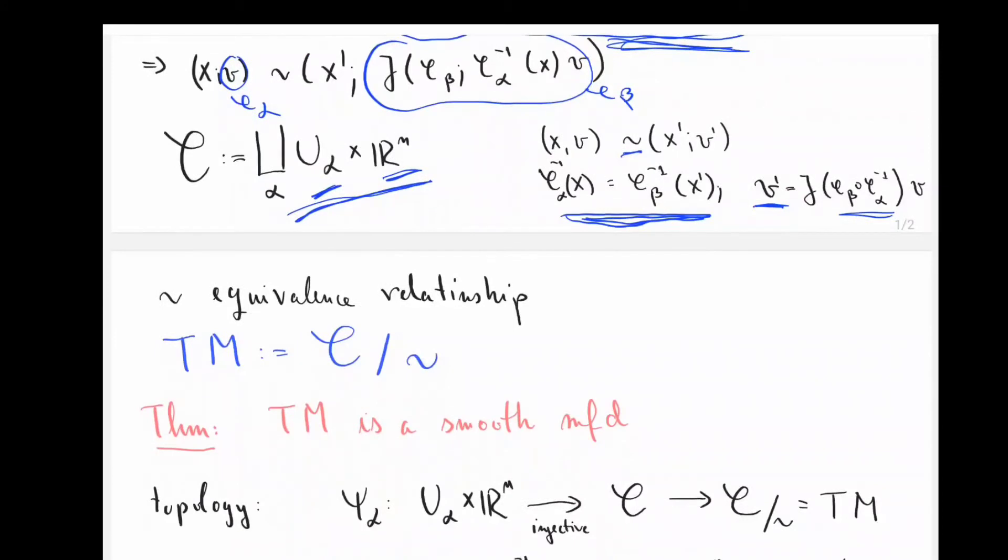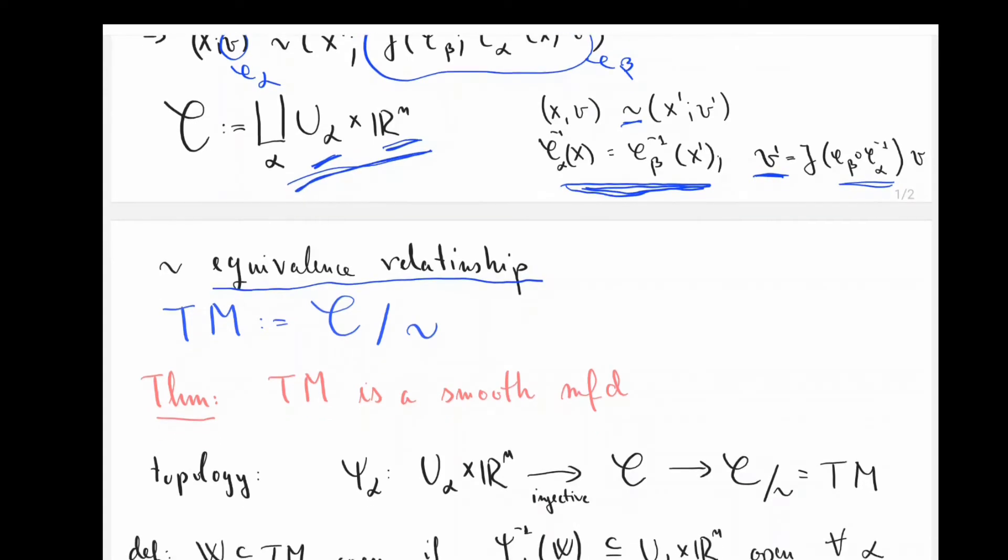Now it's not difficult to show that this relationship tilde is an equivalence relationship, allowing us to introduce the tangent bundle, which is nothing but just the quotient space of this equivalence relationship. So I define that over here. And then really the upshot is, and I will explain you this theorem, the tangent bundle is also a smooth manifold. And it's not too difficult to see this, but you have to sort of take this step by step. So the first thing that the tangent bundle needs in order for it to be a manifold is a topology.